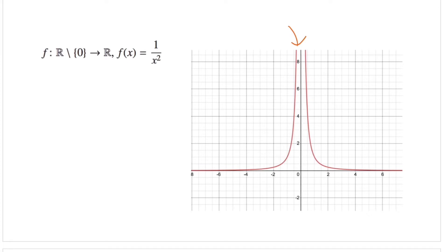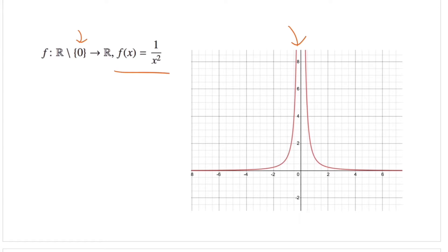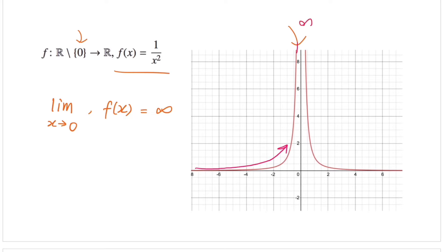Let's look at this function. So the function f, where x can be any real number except 0 — excluding 0 — because the function is in a fraction form and the variable x is in the denominator. We can never have 0 as the denominator, so x can be any real number except 0. We can clearly see that as x approaches 0 from both the left and the right, the function f(x) increases without bound. The limit notation for this is: the limit when x approaches 0 of f(x) approaches infinity. When x is increasing from the left-hand side, getting closer to 0, the graph is getting higher and higher with no upper bound — it can go on forever — therefore approaching positive infinity.